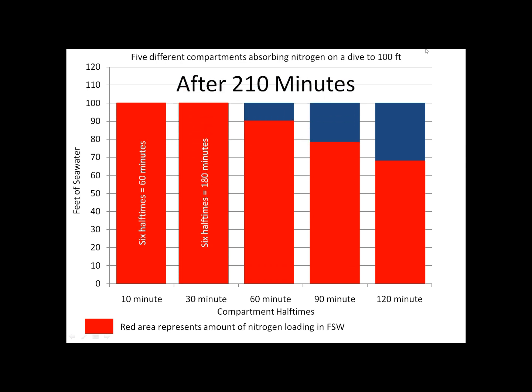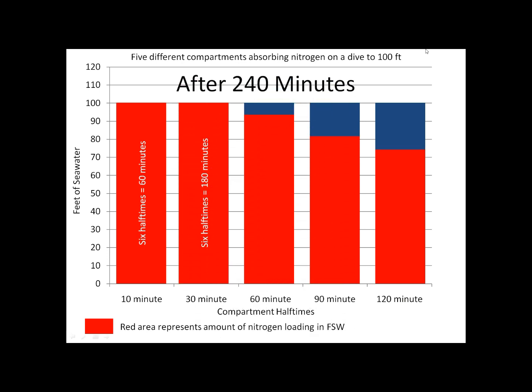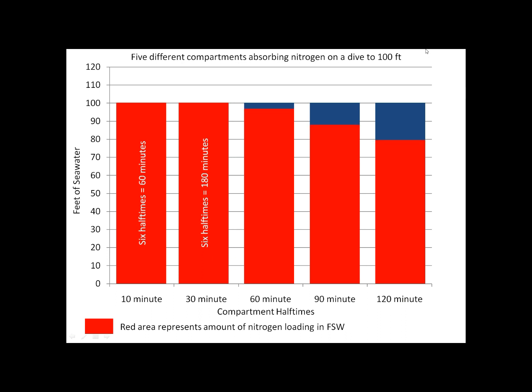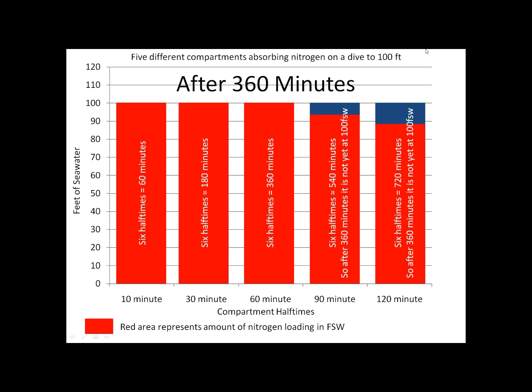But the slower compartments — the 60, 90, and 120-minute compartments — are still absorbing nitrogen even after 240 minutes. At 270 minutes these slow compartments are getting reasonably close to equilibrium, but the speed at which those bars are moving is getting slower and slower. The 60-minute compartment has done six half times and reaches equilibrium at 360 minutes. But even after 360 minutes, the 90-minute and 120-minute compartments would still have a little more nitrogen to absorb, demonstrating how a compartment's half time affects the rate at which nitrogen is absorbed into it.